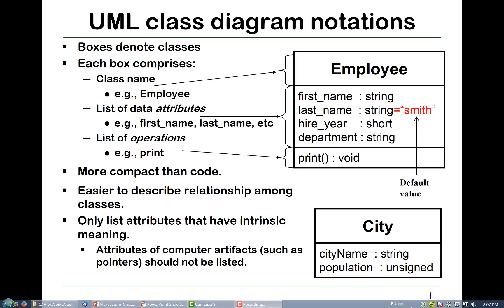For each attribute, we list the attribute name, then a colon, and then the type of the attribute. If an attribute has a default value, then you write equals and the default value.